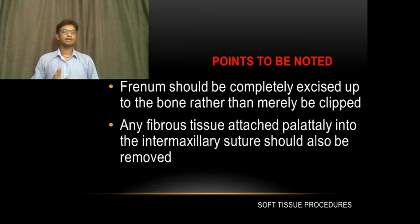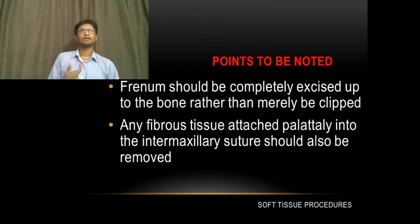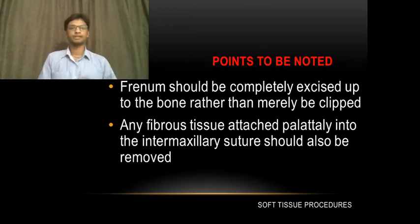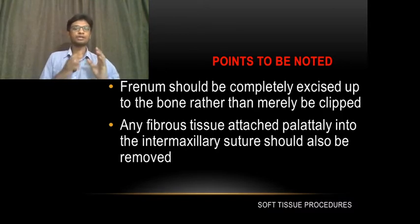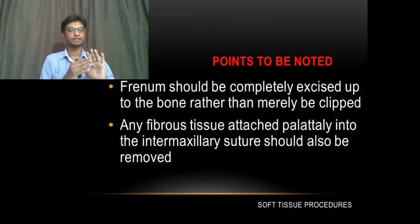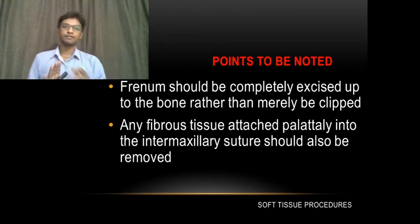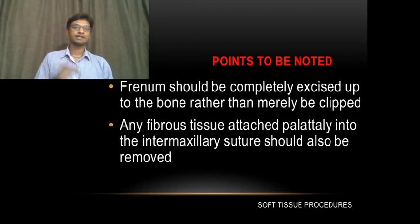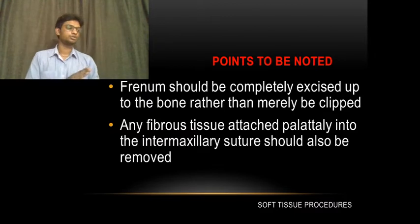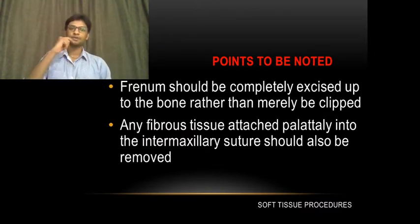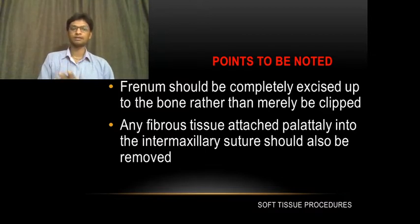The important point to note is that the frenum should be completely excised up to the bone, rather than merely clipped. In practice, sometimes only the labial aspect is addressed, but we have to completely remove from both the labial aspect and the palatal aspect, near the incisive papilla. There should be no remnants on either side, because high frenal attachments have a tendency to reattach. Any fibrous tissue attached palatally into the intermaxillary suture should also be removed and scraped clean.